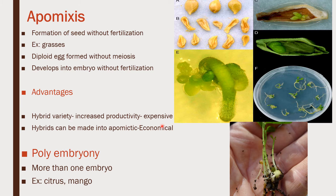Hybrid varieties are available in the market but are very expensive. When hybrids are made into apomictic seeds, it becomes economical — farmers do not have to knock on the doors of companies for seeds. Farmers can keep on using hybrid seeds year after year in rotation without having to buy new hybrid seeds every year. These are the advantages of apomixis.